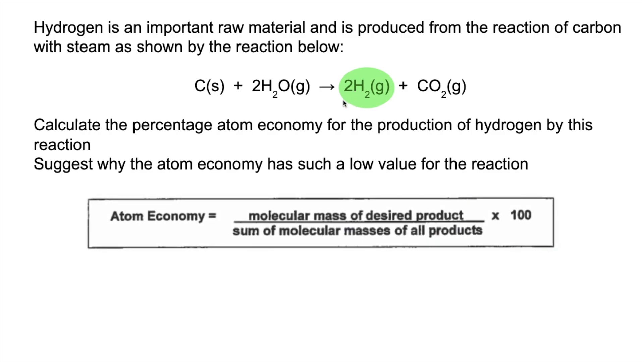So there's the formula again. This time we've got to factor in that 2. So the MR of the desired product is 2 moles of hydrogen so it would be 4 not just 2.